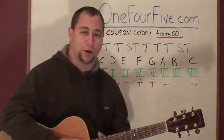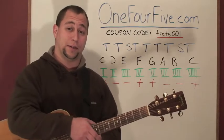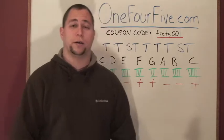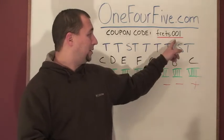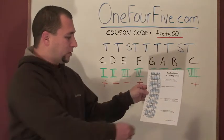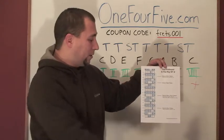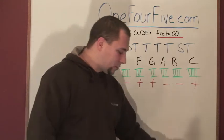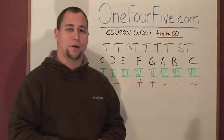So that's very quickly and very basically how you could write a song, or at least find the chords to use in a song in any given key. If you'd like to know more, I go into a lot more detail at 145.com, and if you use the coupon code FRETS001, I'll also give you this cool PDF which shows all of the different notes in the key of A on the fretboard, boxed out so you can see how to play those notes in a scale pattern anywhere on the fretboard. That's only available if you use that coupon code. Head on over to 145.com and we'll see you there.